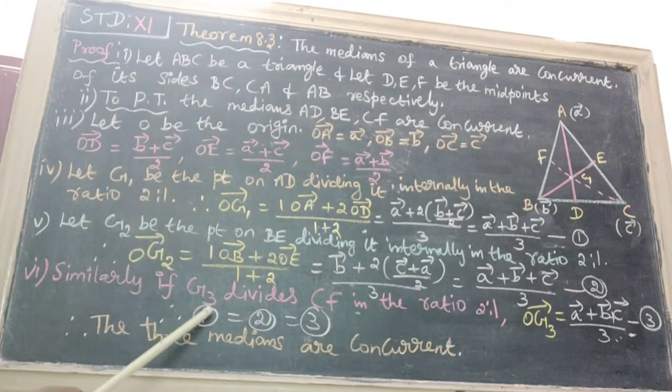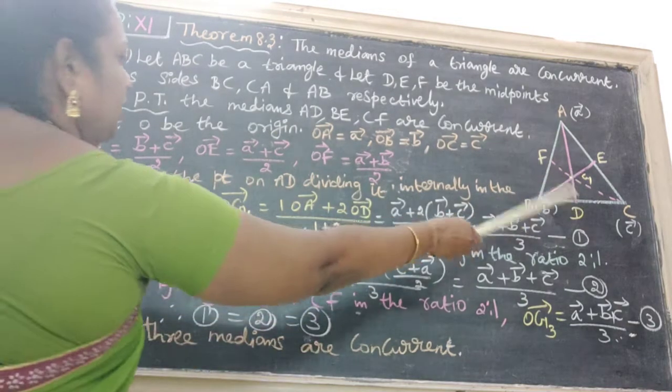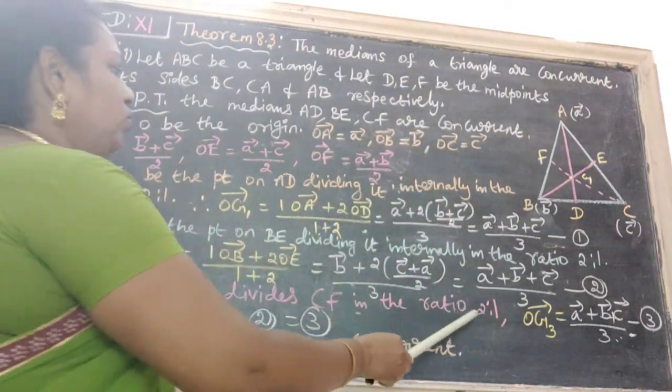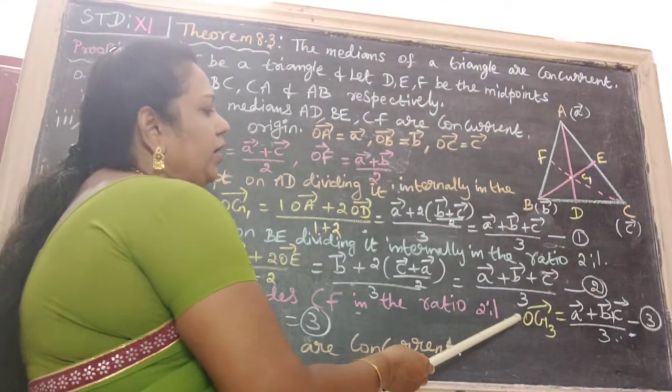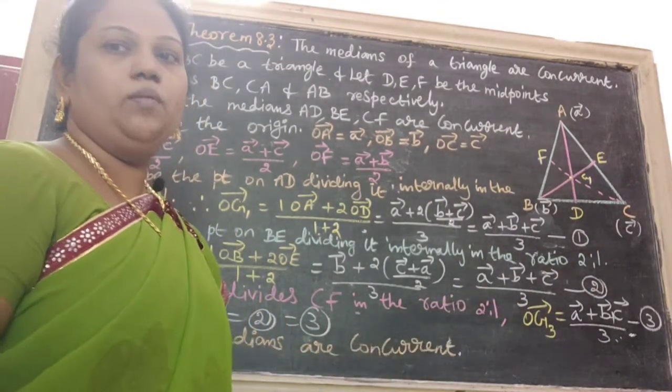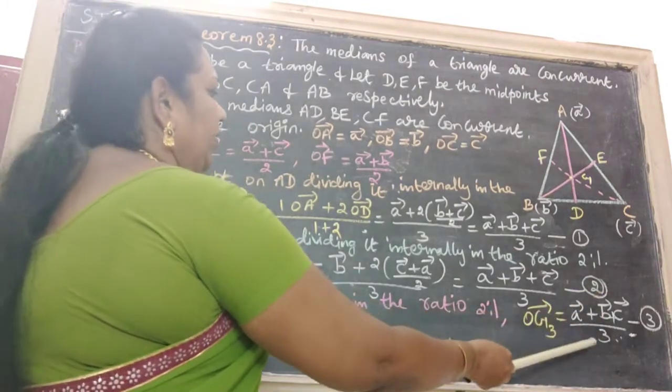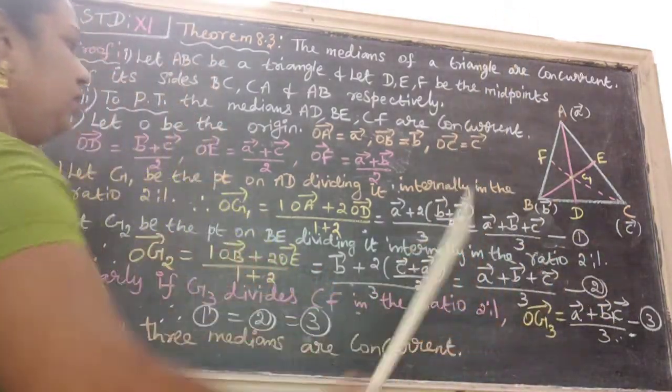Similarly, if G3 divides CF in the ratio 2:1, we get OG3 vector equals A vector plus B vector plus C vector divided by 3. That is equation number 3.